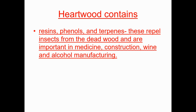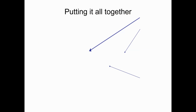Heartwood contains resins, phenols, and terpenes, which the plant manufactures to repel insects so they don't eat the plant from the inside out. These compounds also have a positive impact on human health — this connects to the shinrin yoku reading which specifically mentioned phenols and terpenes. They're important in construction, since some woods repel insects better for building closets. They're also used in wine and alcohol manufacturing — that's how wines get their flavors from the phenols, resins, and terpenes in the barrels.